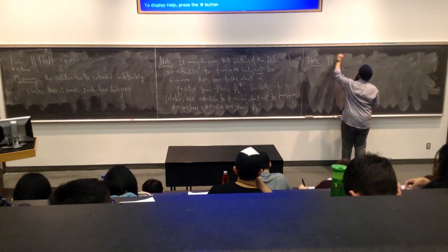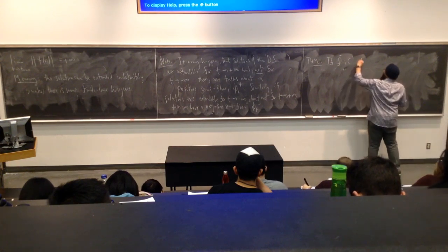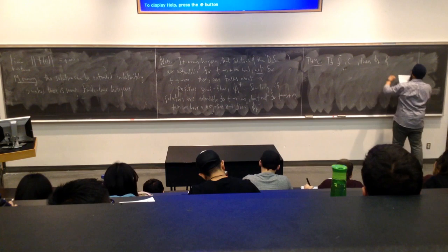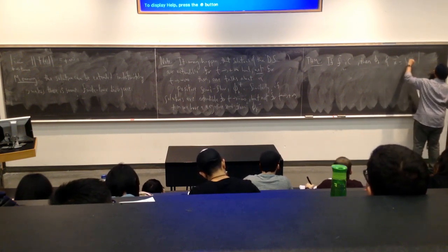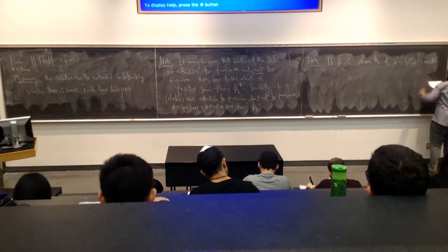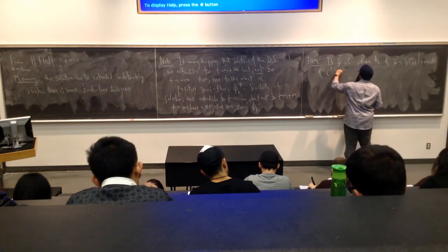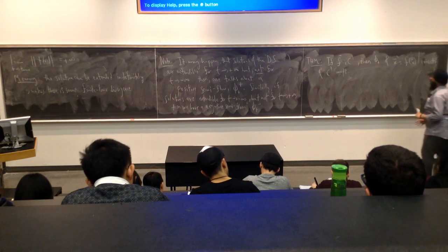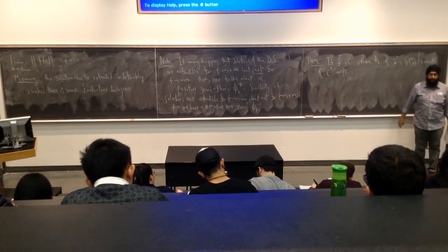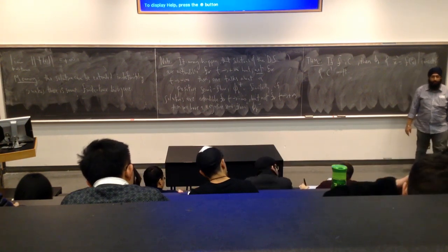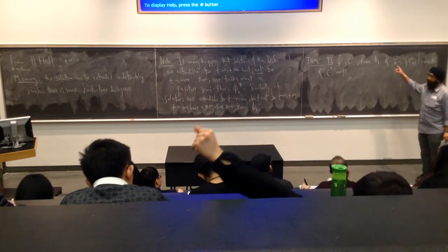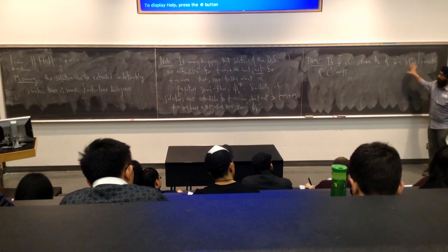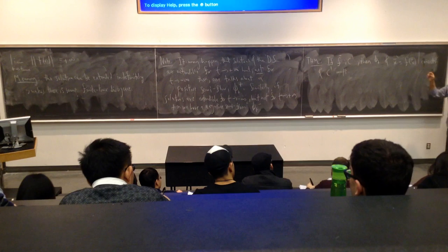F is once again C1 continuous. So the flow associated with my dynamical system consists of C1 maps. What does this mean? The flow — think of it as all possible initial conditions — if f is C1 continuous, then the flow of the corresponding differential equations consists of C1 maps. That means the flow itself is C1 continuous.